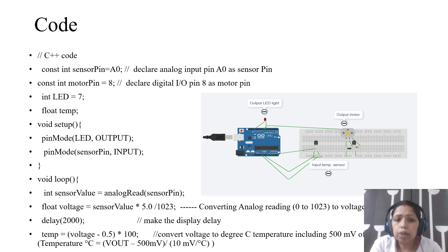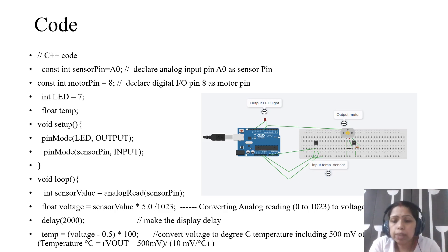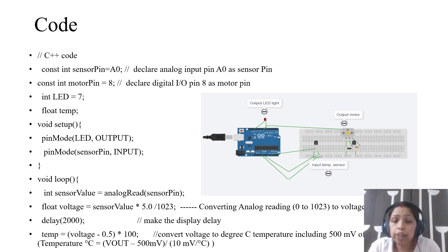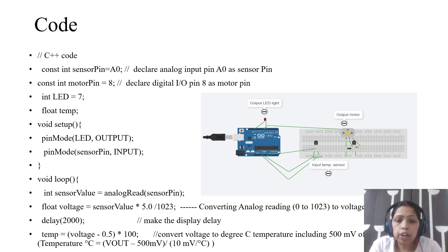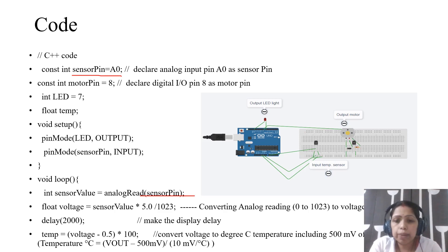Under the void loop function, you write the main set of code. First, the Arduino will collect data from the temperature sensor. To collect data from an external device, we use the read function — digital read or analog read. Because the temperature data is in analog form, we use analogRead with the sensor pin number. Automatically the temperature will be collected and stored in the sensor variable.